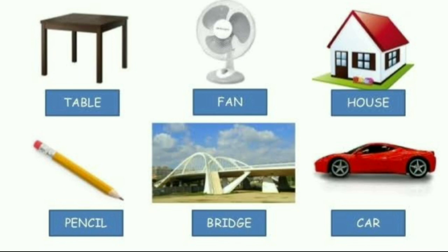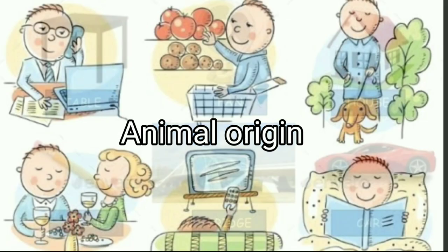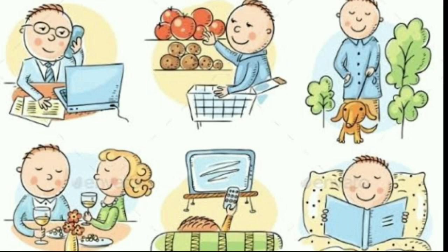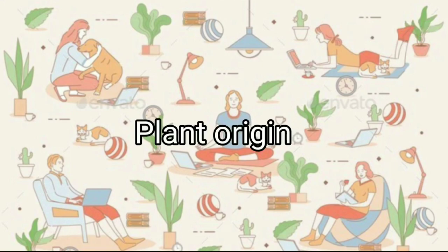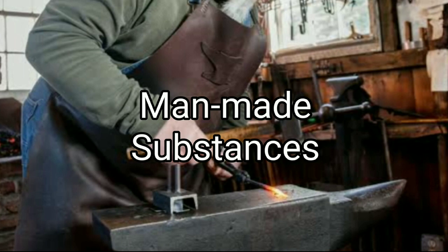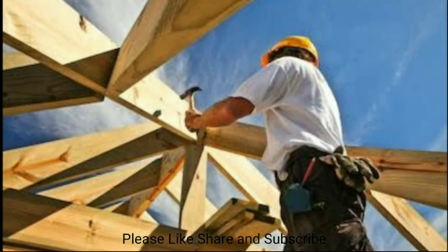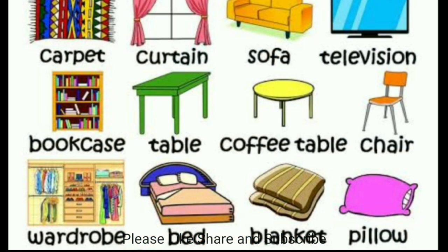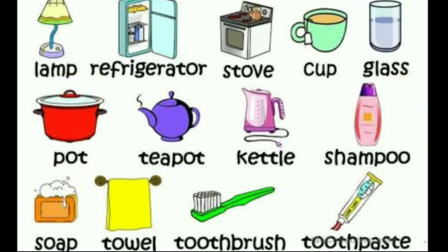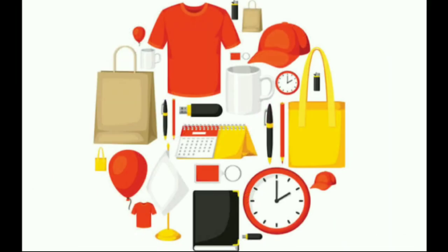Man-made Substances. It is human nature to strive for newer things and to try to make life more comfortable. As a result of his efforts, man not only learned to use natural substances, but also began to process them to make new substances. Several such substances are easier to use and can be made available in plenty at a low cost, so they came to be used on a large scale. New substances produced by processing naturally available substances are called man-made substances.